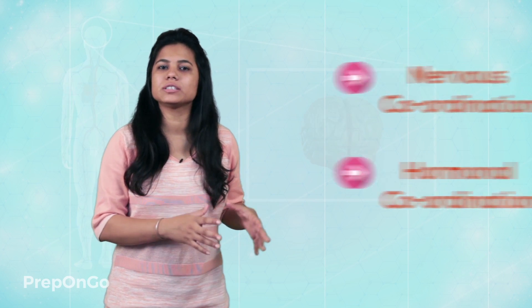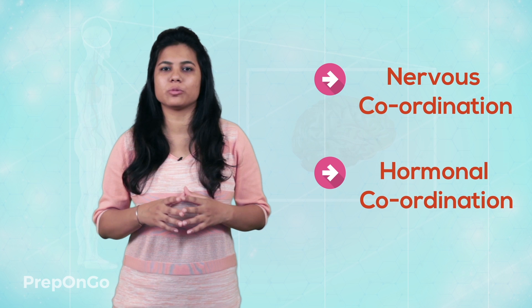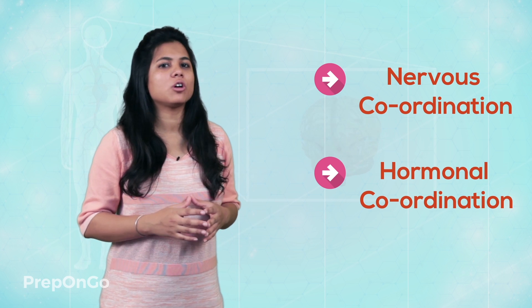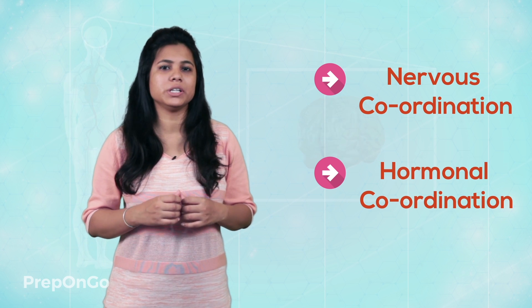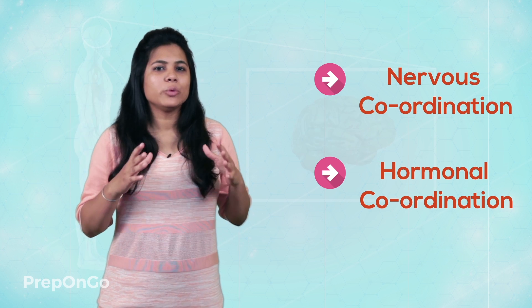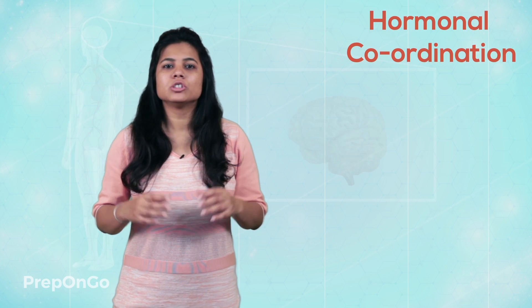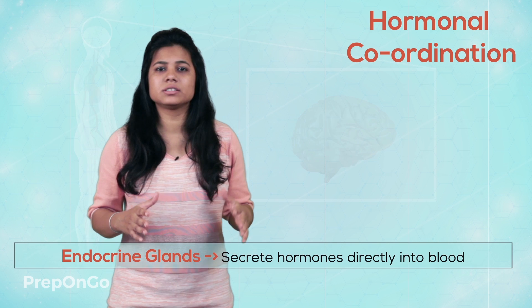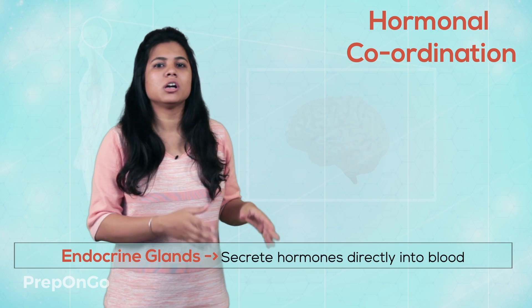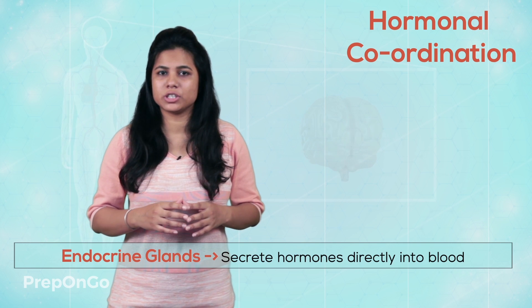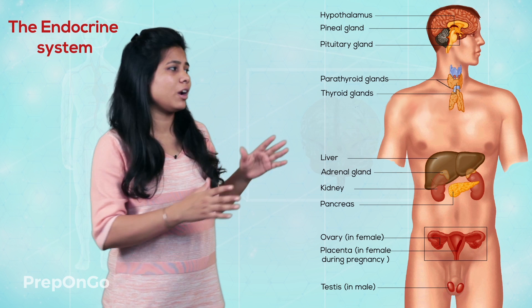Hello everyone. In the last video, we had seen what is nervous coordination and what is hormonal coordination. If there is a hormonal coordination system, then there are hormones that have to be transmitted through the body. All the glands that secrete their products or hormones directly into the blood without the involvement of nervous tissue are called endocrine glands, and the system as a whole is called the endocrine system.